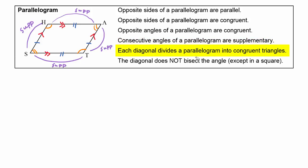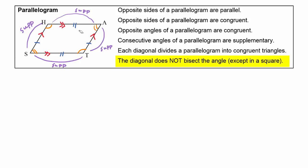Each diagonal divides the parallelogram into congruent triangles. If we drew in diagonal SA, those two triangles would be congruent, and if we drew in diagonal HT, those two triangles would also be congruent. One important thing to keep in mind is that the diagonal does not bisect the angle — drawing diagonal SA does not divide angle S into equal pieces. Only in the very special case of a square will that happen.